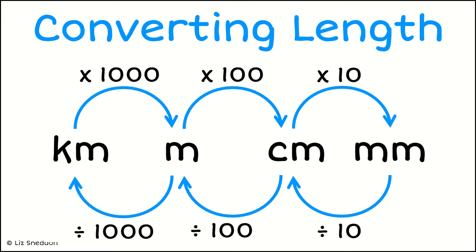Here's a diagram which we want to try and remember to help us convert length. For example, if I want to go from kilometers to meters, I need to multiply by a thousand. In one meter I have a hundred centimeters, so to go from meters to centimeters I multiply by a hundred. In one centimeter I have 10 millimeters, so I need to multiply by 10 to go from centimeters to millimeters. In the reverse way, I will be dividing by those numbers.